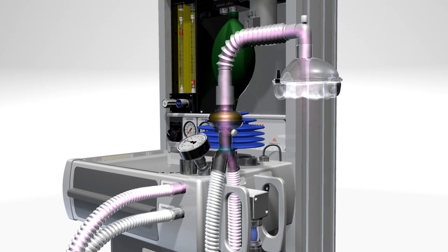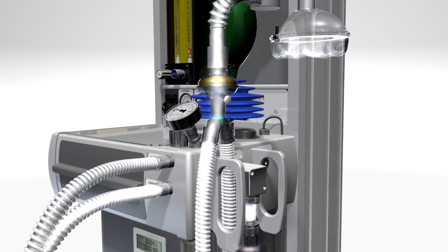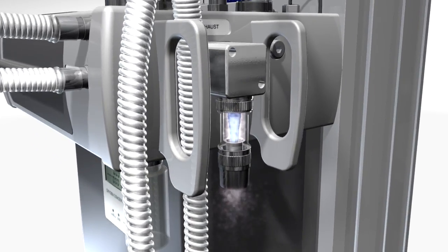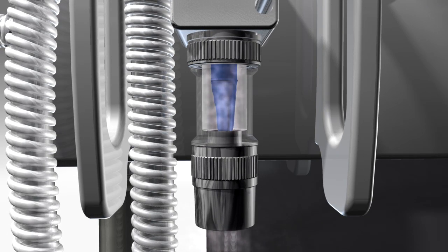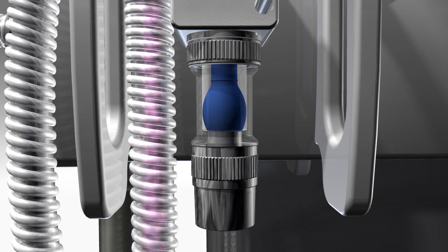The expiratory limb of the Y-piece channels gas to an inflating valve on the UAM that functions like an ambu valve. It uses a balloon made from long-lasting silicone which closes during inspiration to direct gas into the lungs.